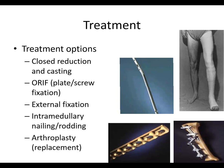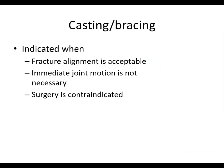The broad treatment options are: closed reduction and casting — here's a nice example of a long leg cast for a tibia fracture; ORIF, or open reduction internal fixation, with a plate and screws; external fixation with pins coming out of the skin and bars and clamps holding it in place; intramedullary nailing with a rod placed inside the intramedullary canal of the bone; and arthroplasty, which is a joint replacement. Those are the broad surgical and non-surgical options.